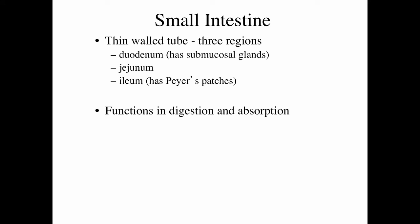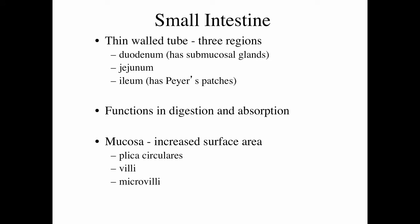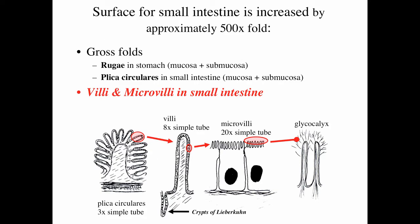The small intestine functions in digestion and absorption. The mucosal surface is increased by several means: the plica circularis, the villi, and the microvilli. There are also discrete structures in the mucosa called the crypts of Lieberkühn, which are basically the glands. The surface of the small intestine is increased approximately 500-fold over that of a simple tube, compared to the rugae of the stomach which increased surface area only about three times.